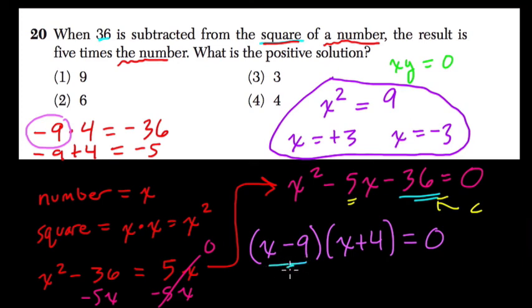So what would this have to be in order for it to be 0? What x value would work? Well, you can solve it. x minus 9 equals 0 when, solving for x, I add to both sides, when x equals 9.